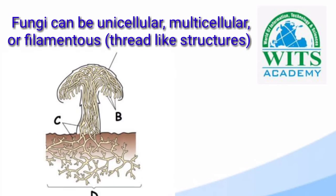Fungi can be unicellular, multicellular, or filamentous thread-like structures. Unicellular means one cell — an organism or body which we call unicellular, meaning it is made of a single cell.